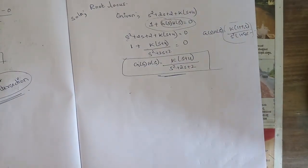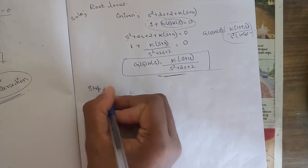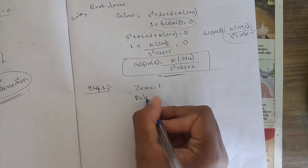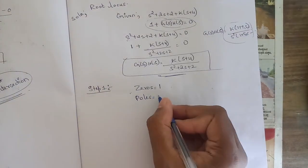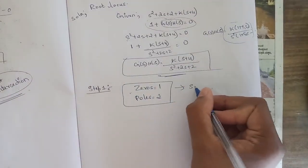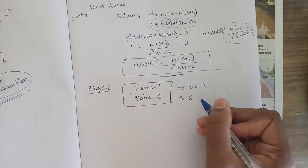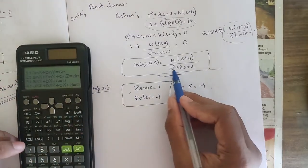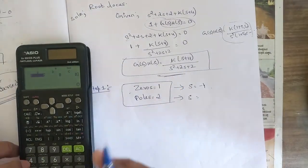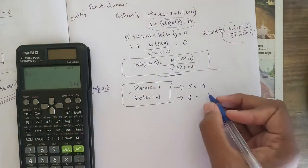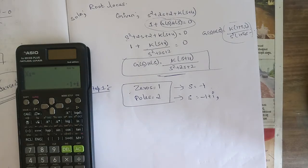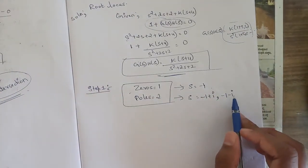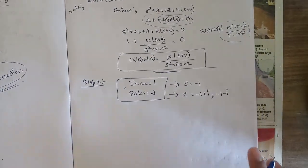Step 1: Calculate the number of loci by finding poles and zeros. We have one zero and, since the denominator is a quadratic equation, two poles. The zero is at s = -4. For the poles, using the calculator with coefficients 1, 2, 2: the roots are s = -1 + j and s = -1 - j. Since the roots are complex, we will need to calculate the angle of departure.